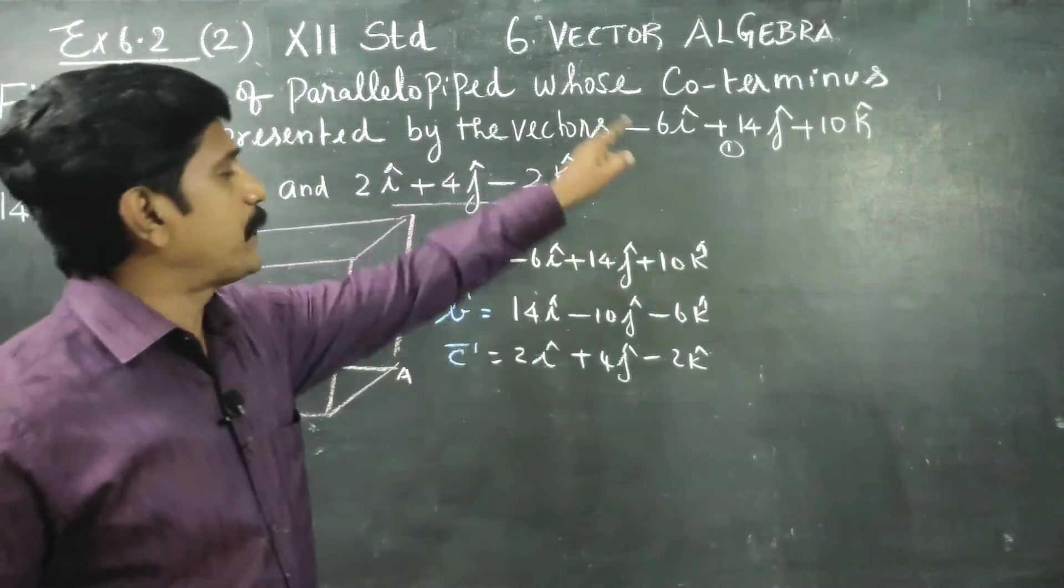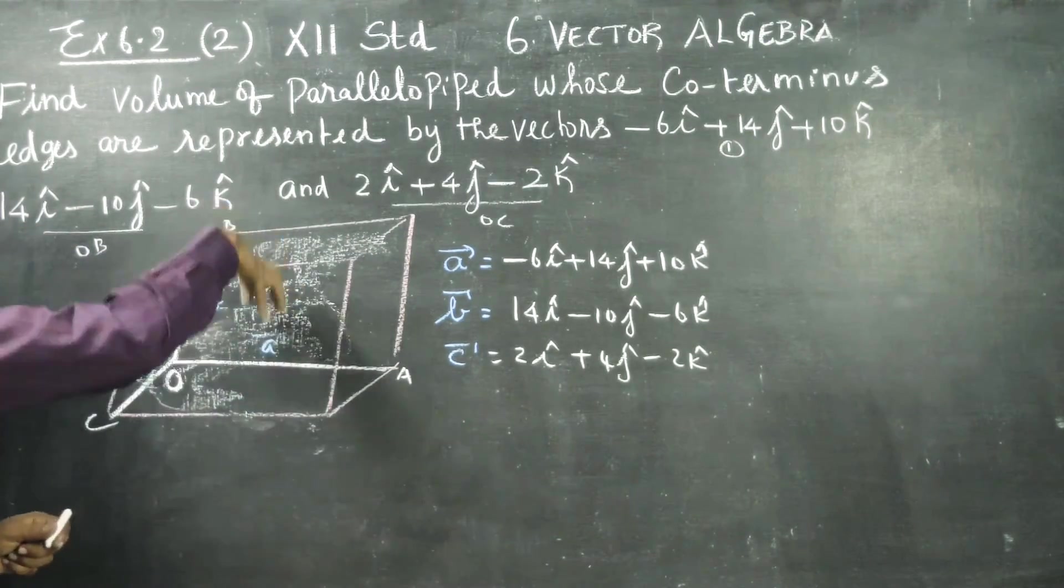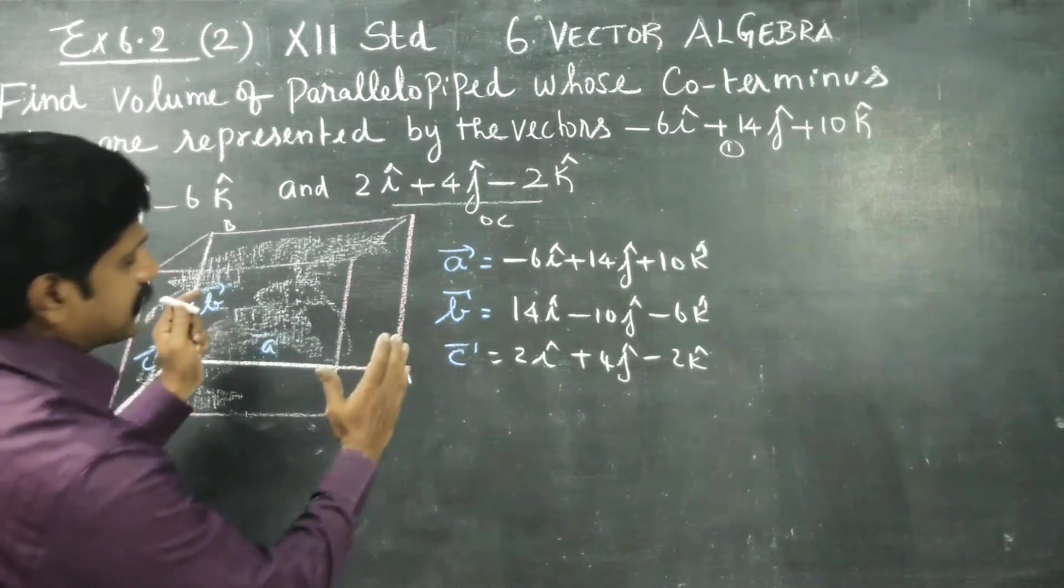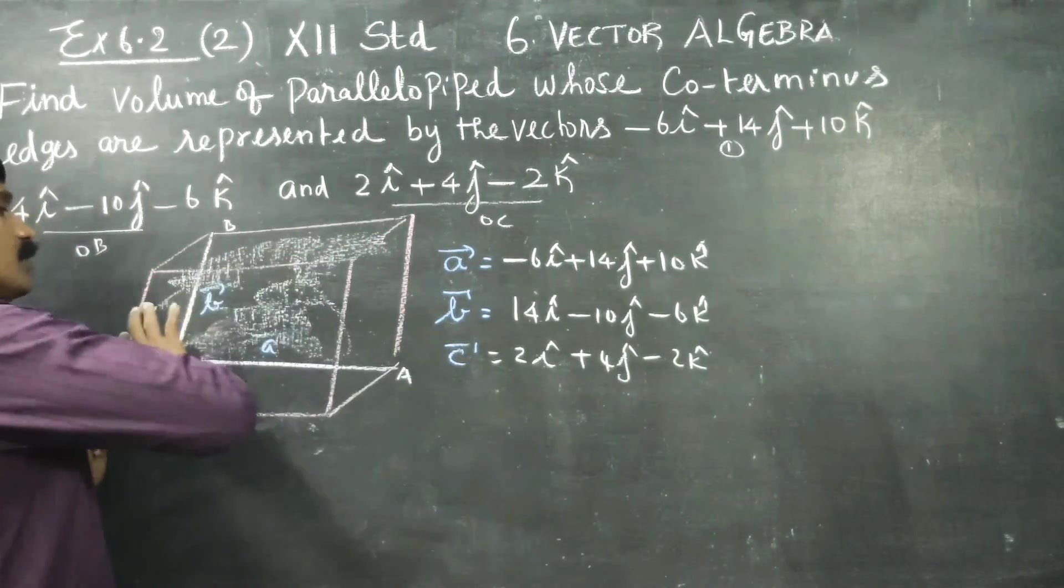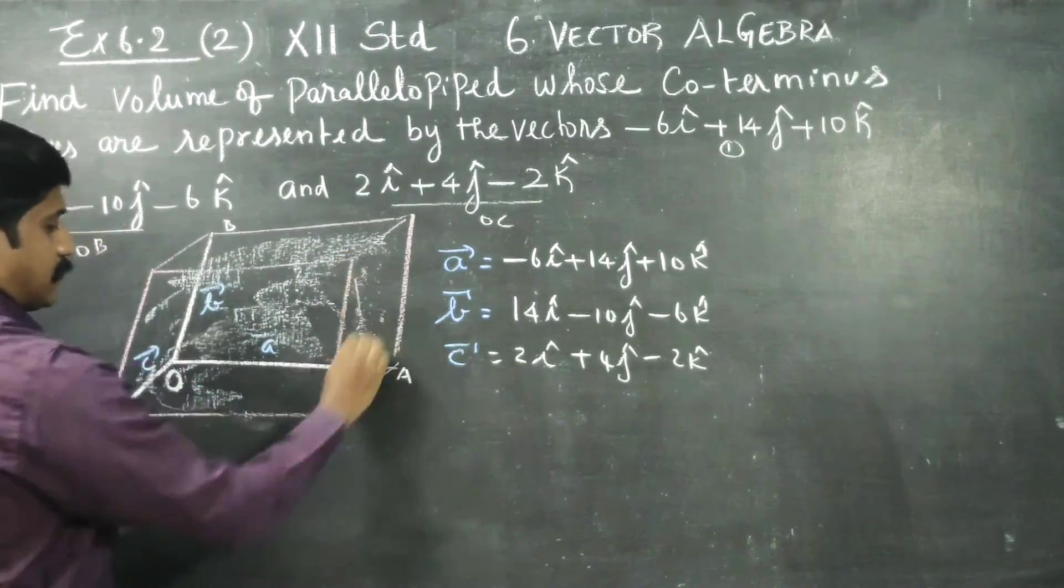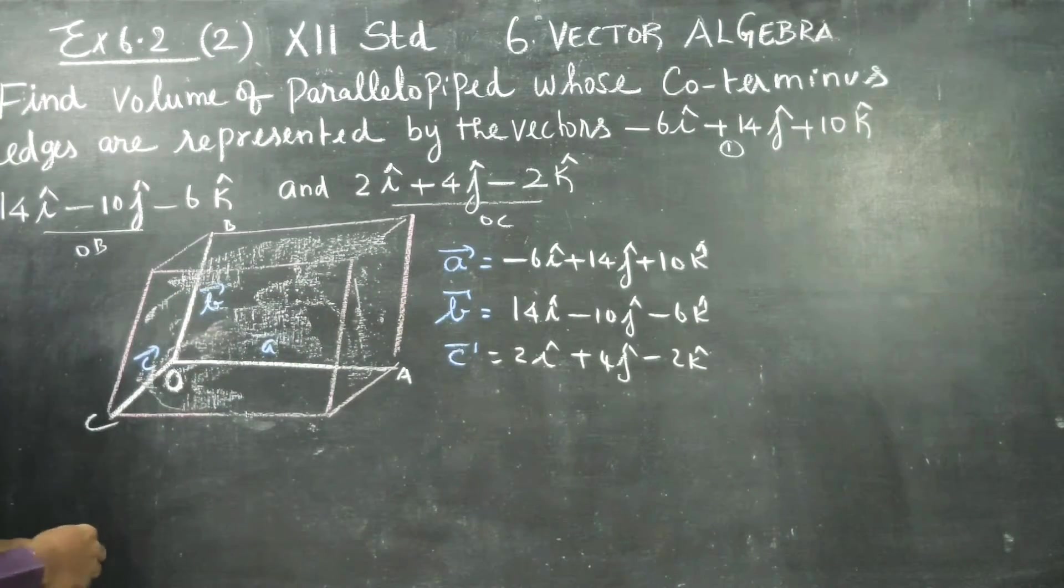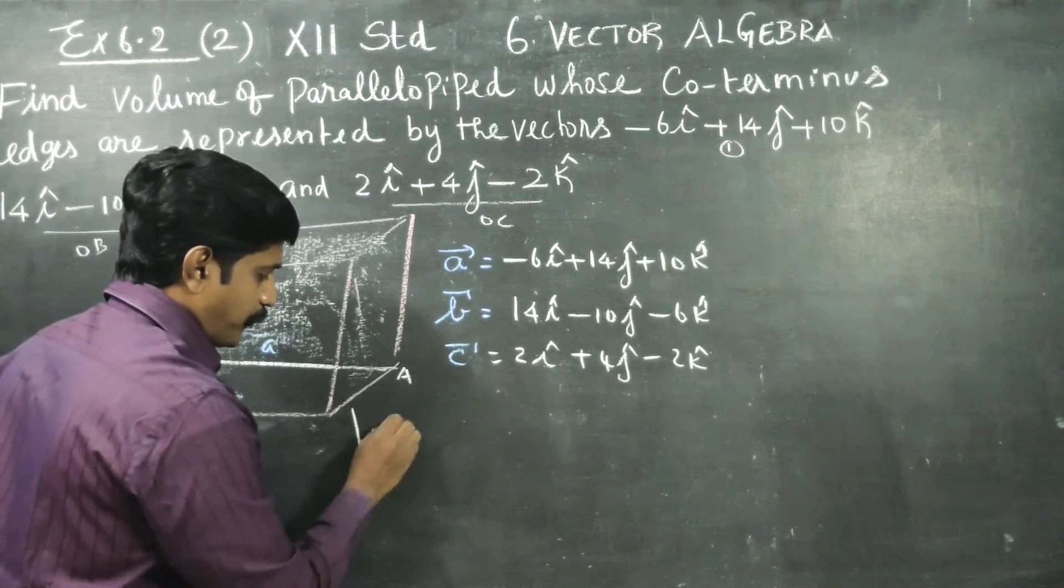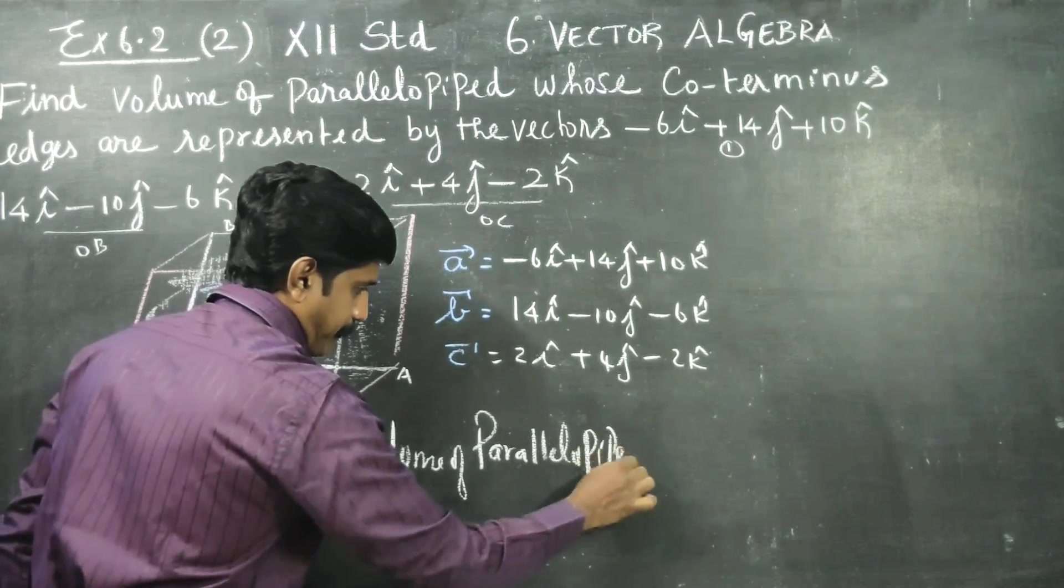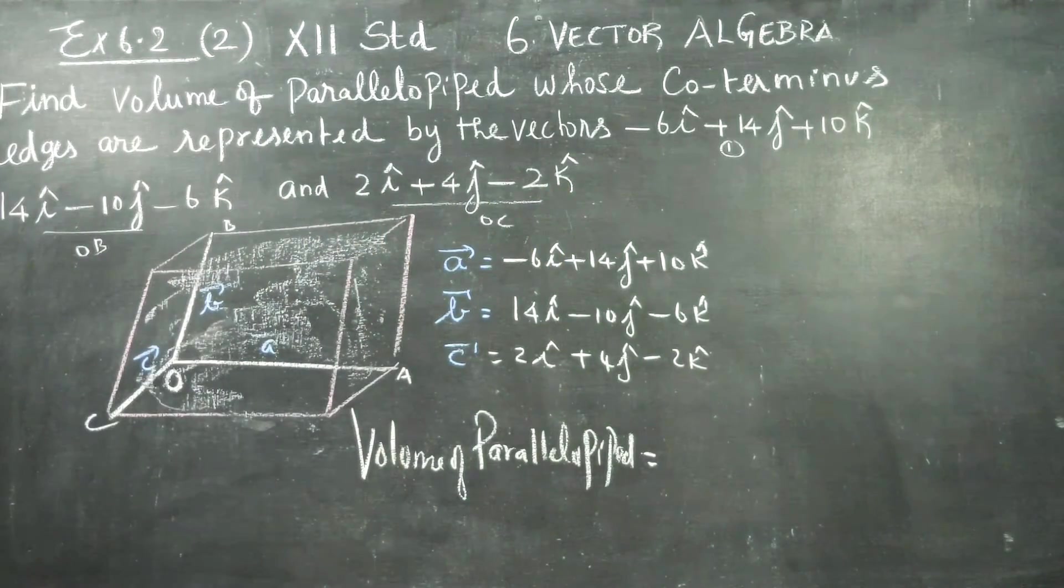Volume is the full capacity of this three-dimensional diagram. How much rice can you fill, how much water can you pour - that is volume. It's like a leaning cuboid. Volume of parallelepiped whose coterminous edges are given: a vector, b vector, c vector. I want to find the volume.